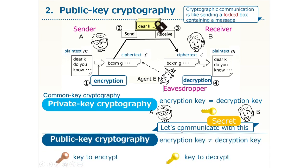In contrast, the public key cryptography uses a different key for encryption and decryption. That is to say, the key used to lock and the key used to open the box are different. This is crucial in the public key cryptography. Furthermore, in the public key cryptography, while the key to decrypt must be secret, we can make the key to encrypt public.